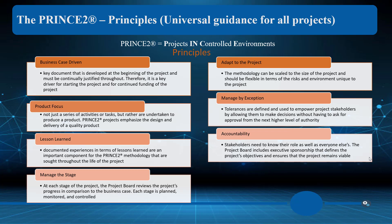Here we are with the principles. Notice business case was in the themes too, but here we're talking about documenting that action being taken. Beginning of the project, it must be continually justified throughout — it's the document we go back to for all the definitions of why we're doing this, who's doing it, when it will be done, what it's going to cost, etc. Product focus — who's going to undertake the product, how are the projects emphasized, the design, delivery, quality. Going back to doing that audit — as we close the project, what did we learn? Then looking at it six months or a year later to make sure that if we said this project would create reduced expenses of half a million dollars within six months, we want to make sure that it did. That's the accountability part — making sure the product actually delivered what we promised.